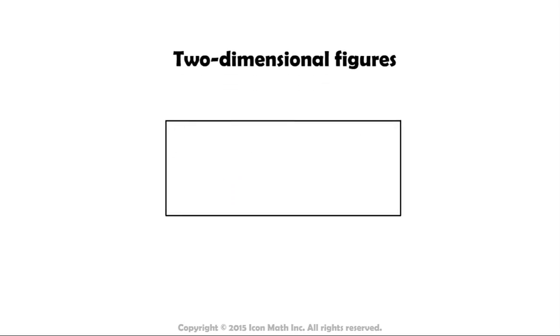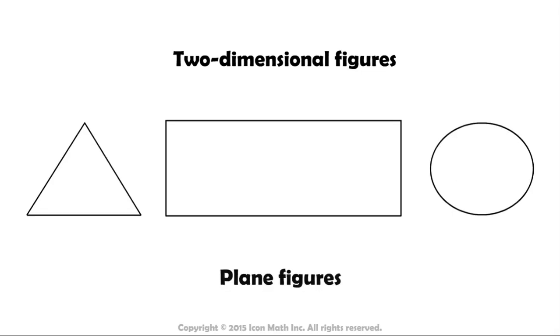Two-dimensional figures are geometrical shapes that have two dimensions, like height and width, but no thickness or depth. In other words, they are flat figures, and we usually call them plane figures.